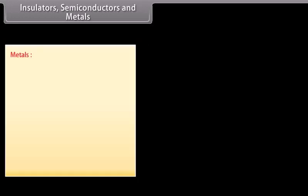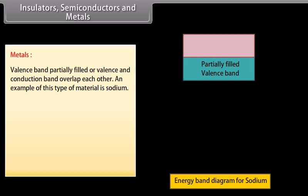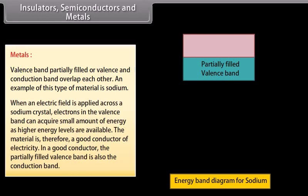Metals have a partially filled valence band, or the valence and conduction bands overlap each other. An example is sodium. When an electric field is applied across a sodium crystal, electrons in the valence band can acquire small amounts of energy as higher energy levels are available. The material is therefore a good conductor of electricity. In a good conductor, the partially filled valence band is also the conduction band.